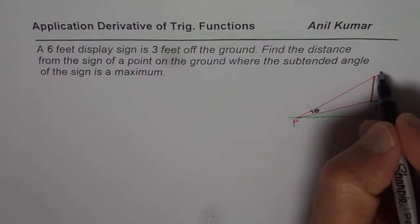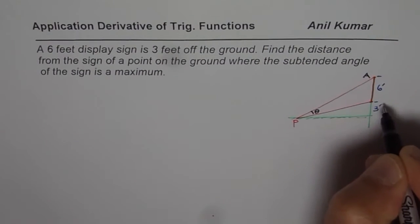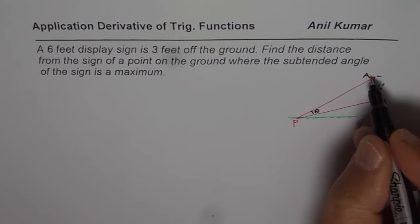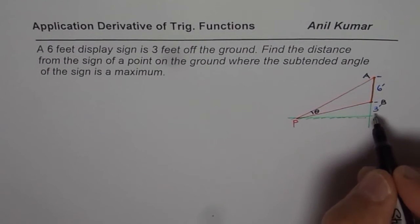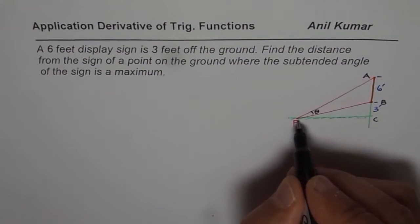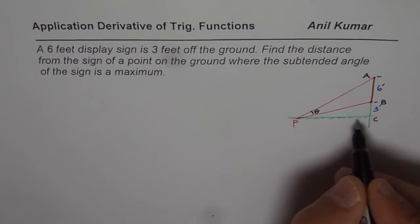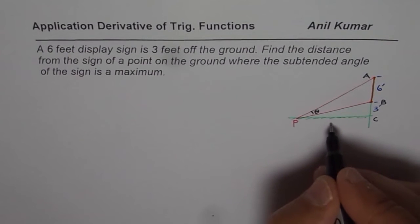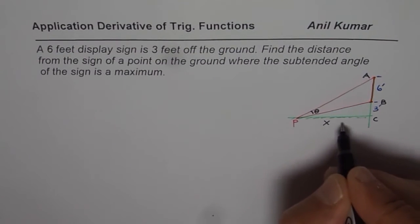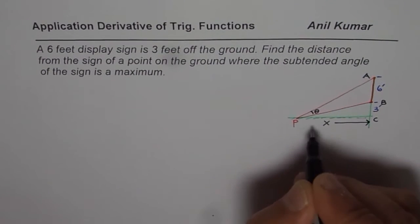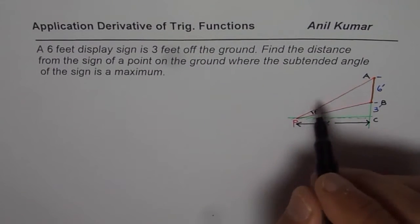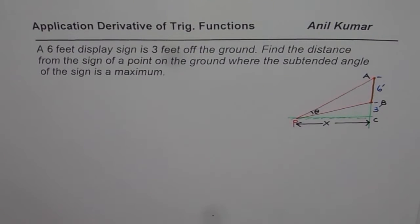Now let me write down, label this a bit. A, B and let's say C, right? So that is the picture, A to B, 6 feet, 3 feet up off the ground, point P is on the ground and we want to maximize the angle theta. So we want to find what is this distance x from where this point will be, from where maximum angle theta is possible. So this is the question for you.